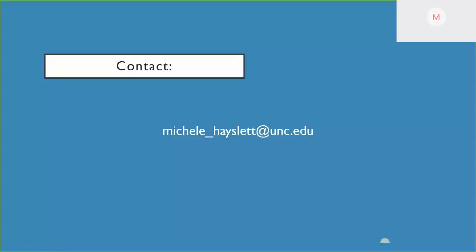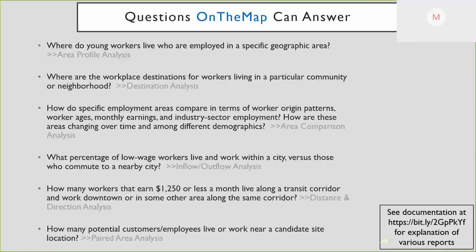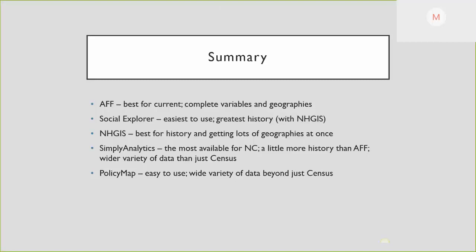There is a summary slide somewhere where I note which database I'd recommend for which use. I did include a slide about On The Map in the bonus material, so there's a little bit of information about that. American FactFinder is best for current, complete variables and geographies. The summary gives you more information to compare the strengths and weaknesses of the different resources.